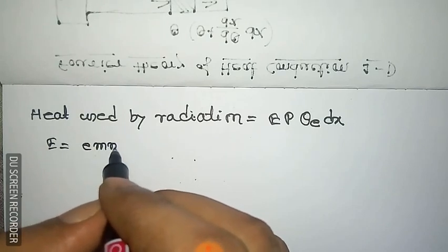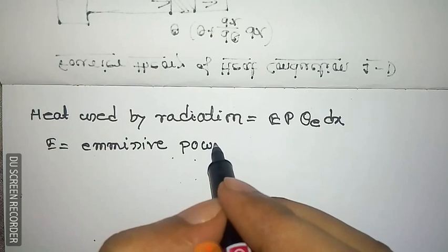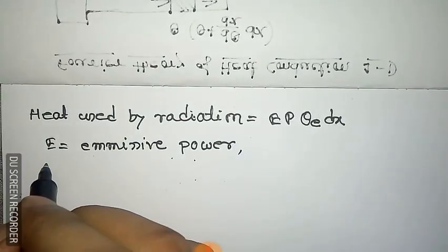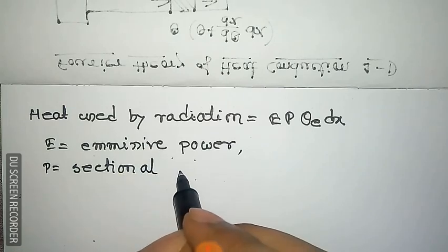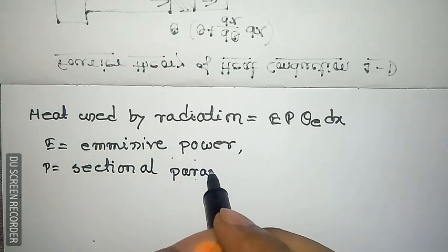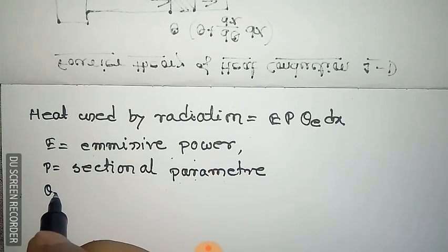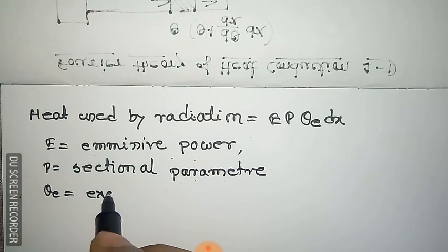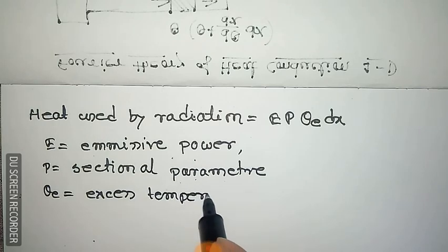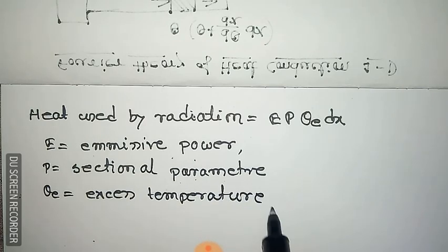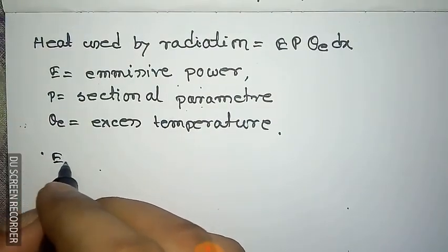The heat used in radiation equals e p theta_e into dx, where e is the emissive power of the material — that is, how much heat the material emits — p is the perimeter of the cross-section, and theta_e is the excess temperature of the material with respect to the surrounding temperature.